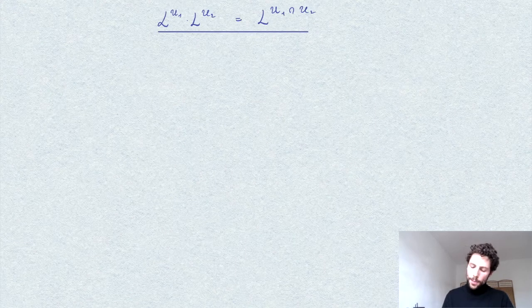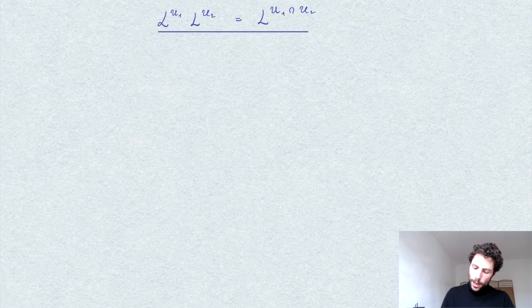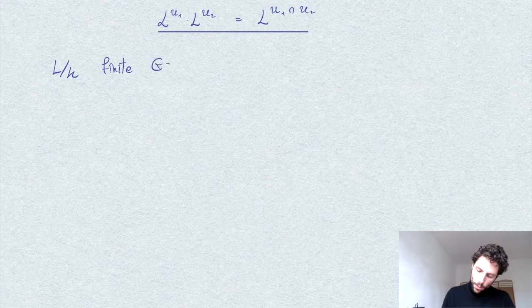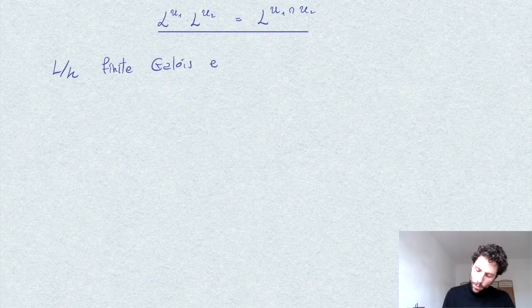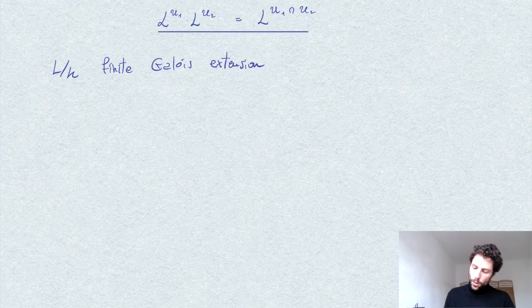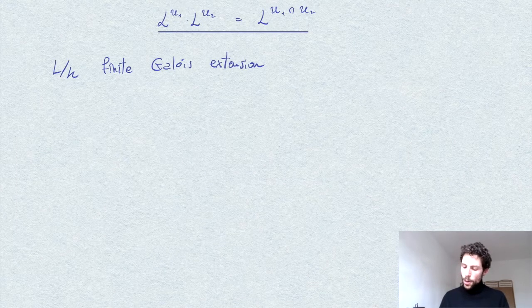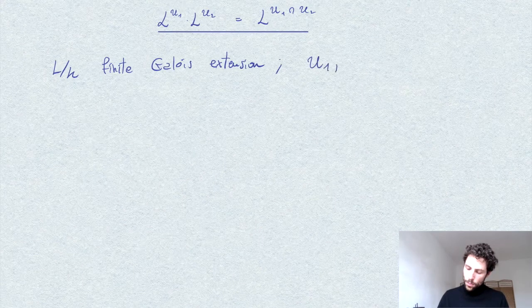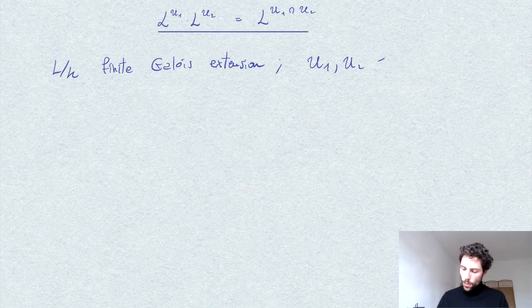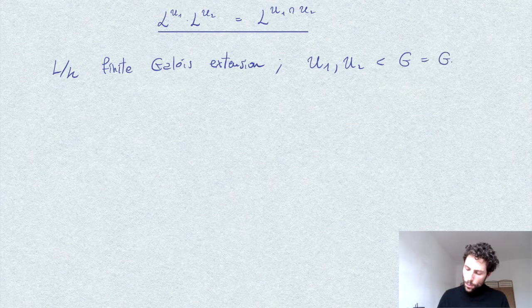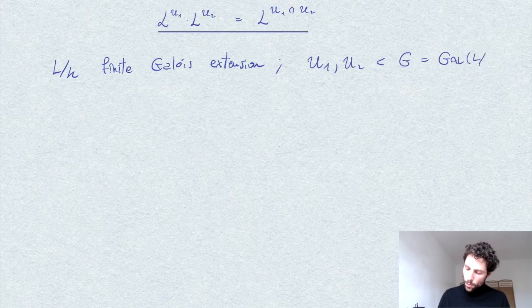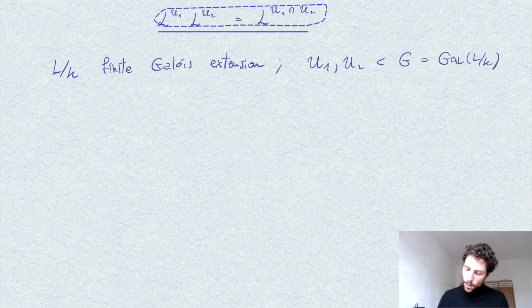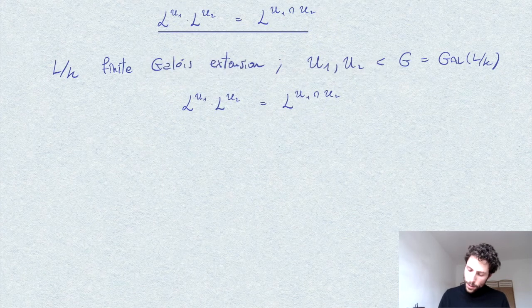I want to give a proof of this formula in the case of a finite Galois extension, where U1 and U2 are subgroups of the Galois group. Then we have, maybe I repeat here, then we get this formula.